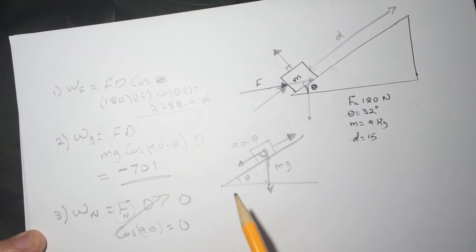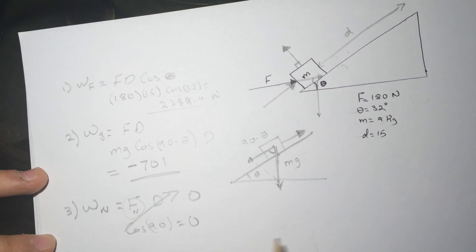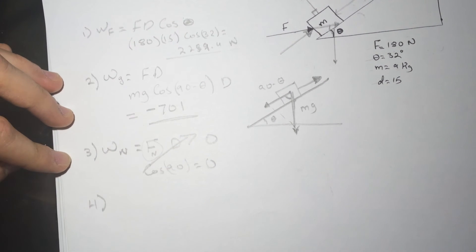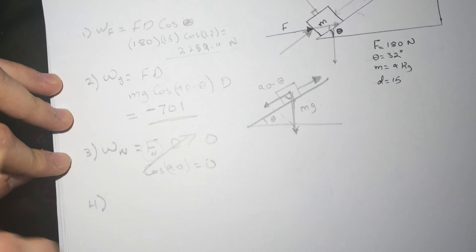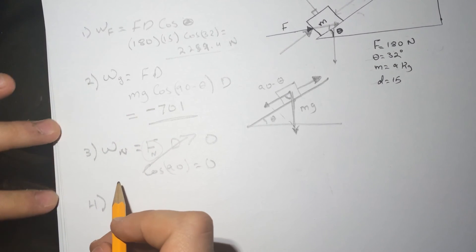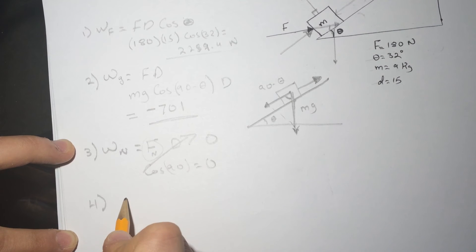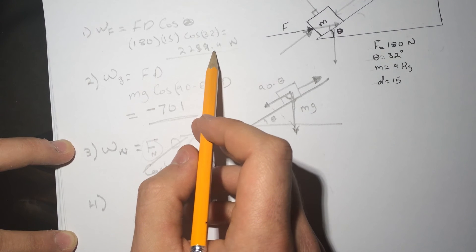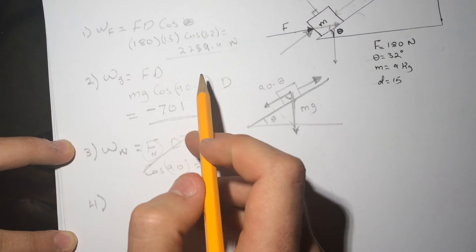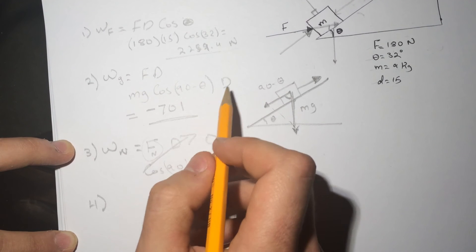Number 4 is asking how fast is the box moving after this displacement. All right, so we have the work done after this displacement by the box and we have the opposite force that's affecting in the other way.